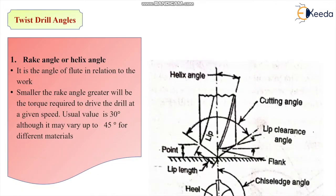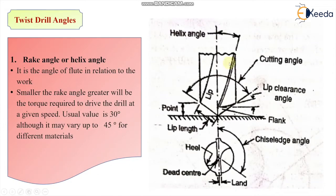Look at the various angles of this twist drill. The first angle is our rake angle or helix angle. This is our helix angle. It is the angle of flutes in relation to the work, the angle of flutes with relation to the work. The smaller the rake angle, greater will be the torque required to drive the drill at a given speed. Usually the value is 30 degrees, although it can vary up to 45 degrees for different materials.